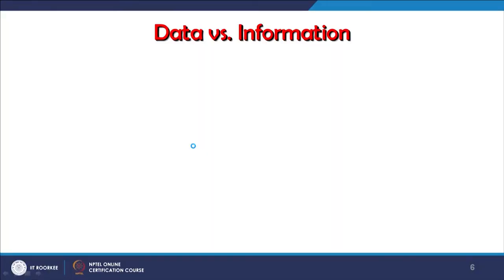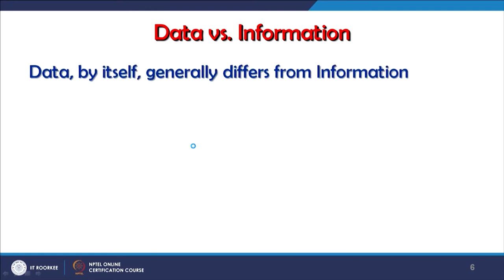Now we continue with data, information, and knowledge. Data is a plural word meaning raw facts. Data by itself generally differs from information because only data after analysis becomes information. Data has to be processed — data on a pen drive or hard disk doesn't mean anything by itself. Whether it is textual data, census data, or any other type, it is just raw facts that must be analyzed before it becomes information.